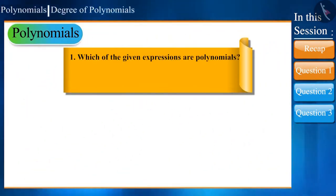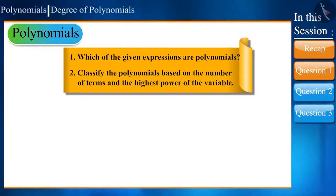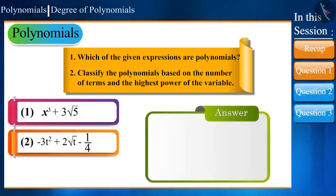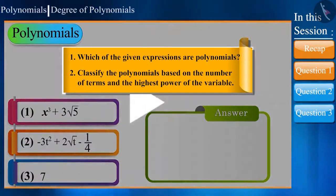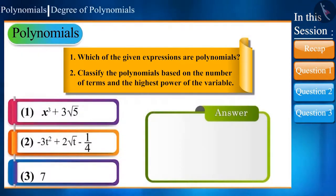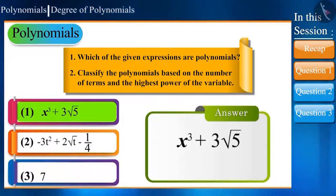The first question: Which of these expressions are polynomials, and classify them based on the number of terms and the highest power of the variable? You can pause the video to answer. The first expression, x³ + 3√5, has only a single variable x whose highest power